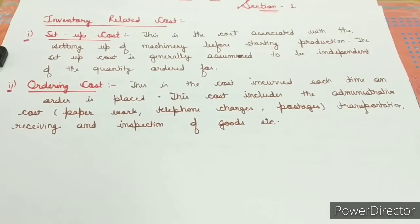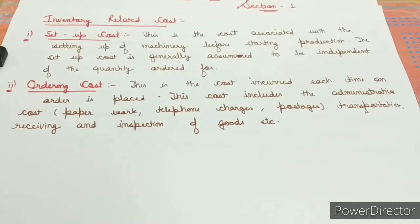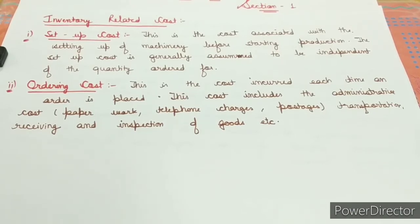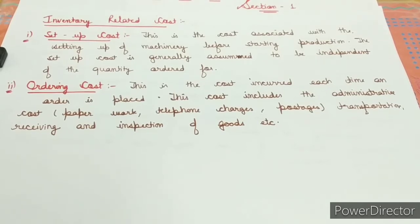Ordering cost is the cost incurred each time an order is placed. Unlike setup cost, this cost includes administrative costs such as paperwork, telephone charges, postage, transportation, and receiving and inspection of goods.